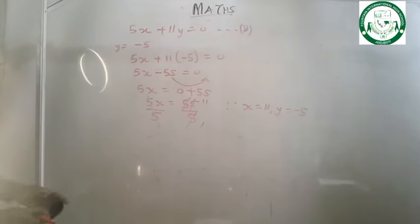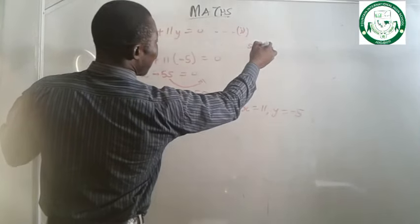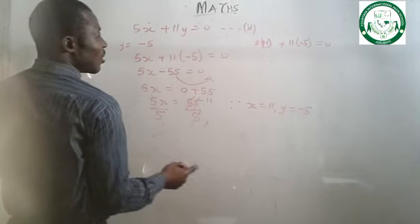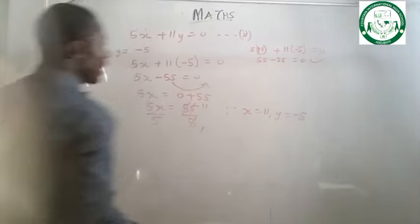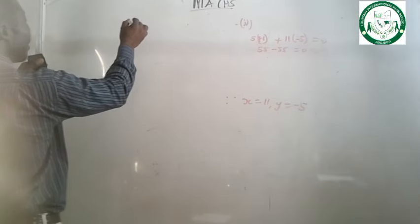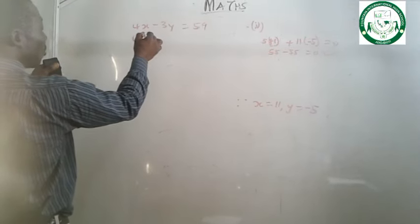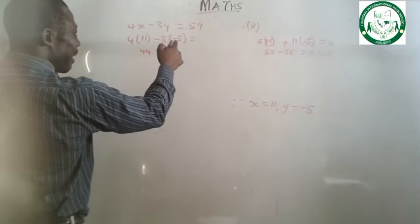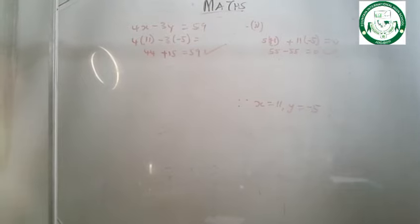We can check our answer. Substituting x equals 11 and y equals minus 5 into equation 2: 5 times 11 plus 11 times minus 5 gives 55 minus 55 equals 0. Correct. Checking equation 1: 4 times 11 minus 3 times minus 5 gives 44 plus 15 equals 59. This is very correct. So x equals to 11, y equals to minus 5.